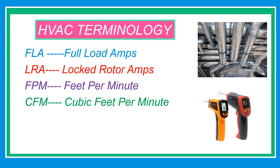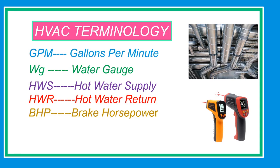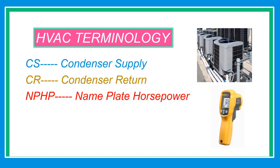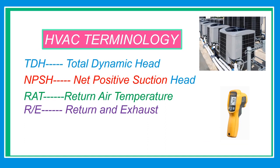HVAC terminology: FLA means full load amperes; LRA means locked rotor amperes; FPM feet per minute; CFM cubic feet per minute; GPM gallons per minute; WG water gauge; HWS hot water supply; HWR hot water return; BHP brake horsepower; CS condenser supply; CR condenser return; NPHP nameplate horsepower; TDH total dynamic head; NPSH net positive suction head; RE return and exhaust.